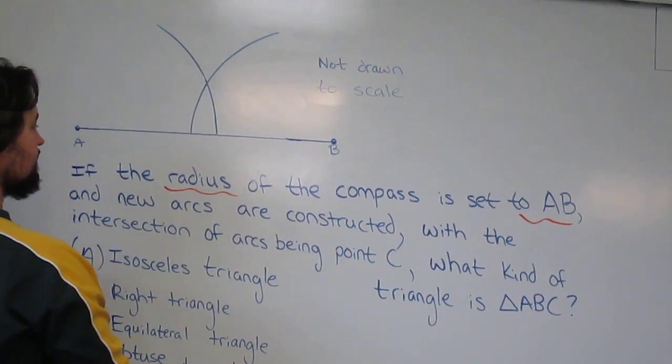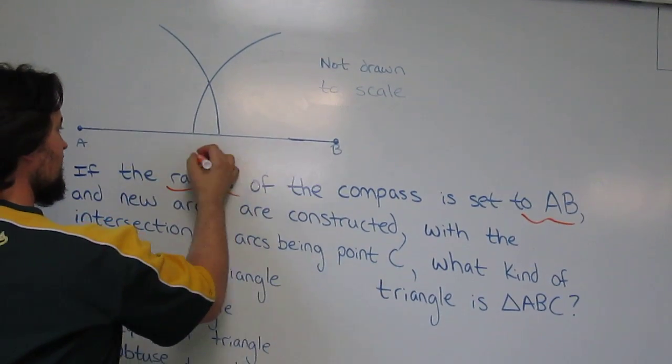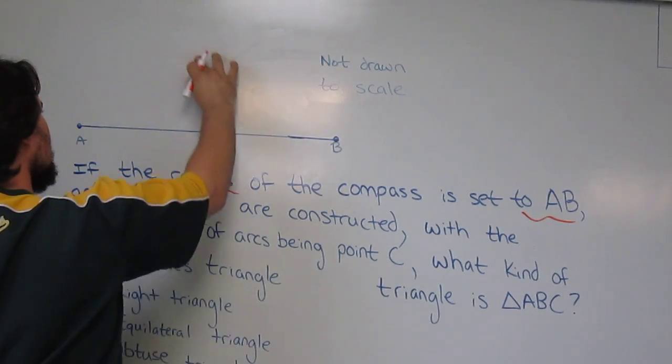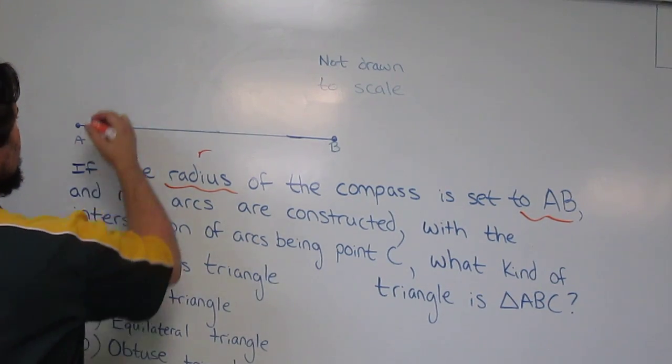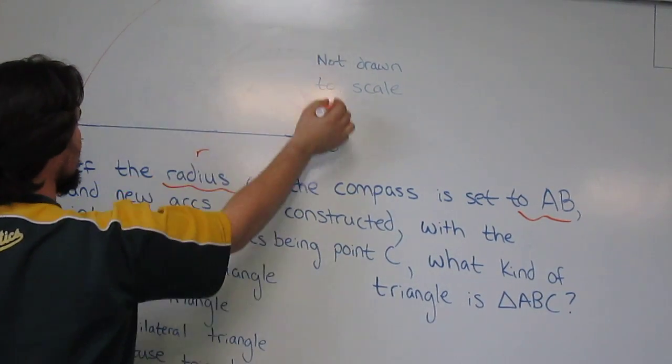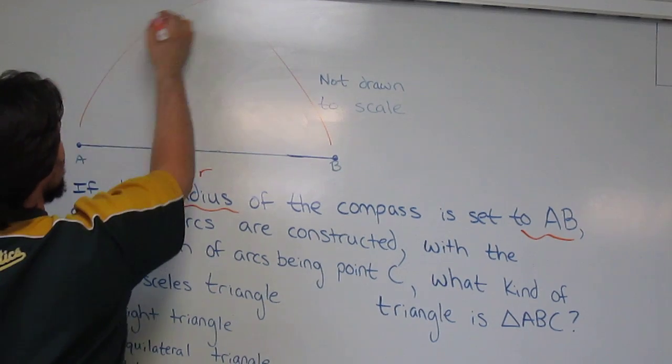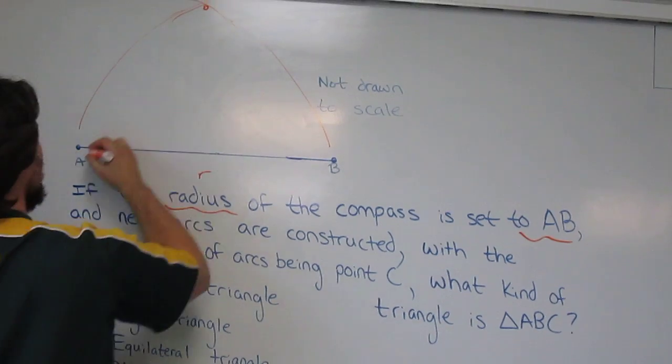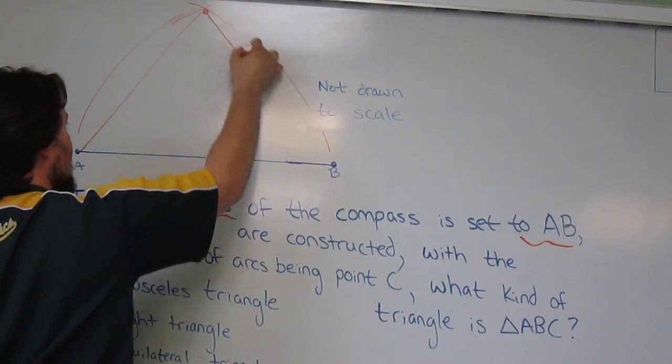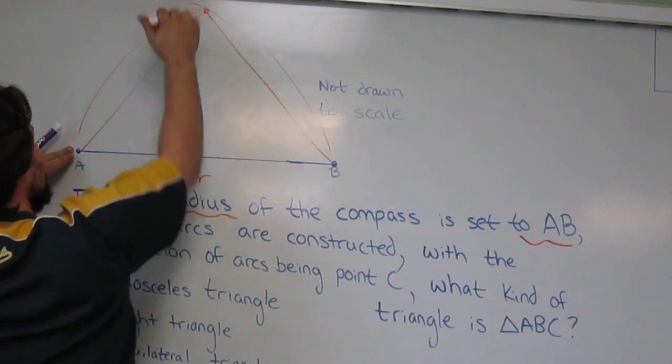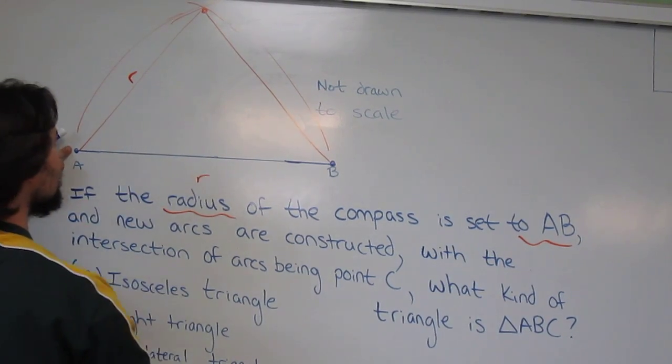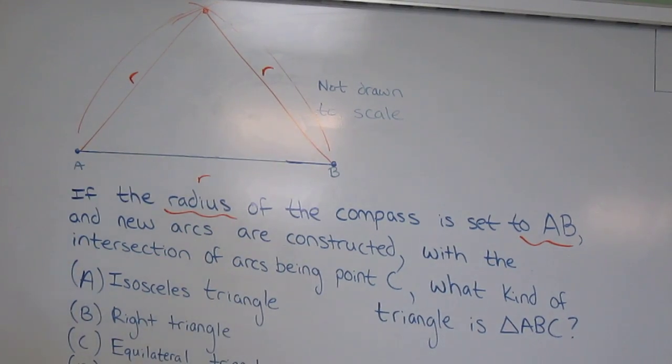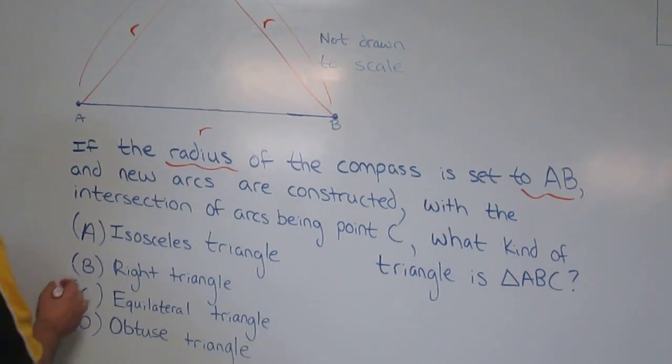through, well this whole thing would be the radius, right? Kind of redrawing these for a second. I want to imagine that it was intersecting way up here, and what we want to note is that that is R as well as this. Since all sides are R, it is an equilateral triangle.